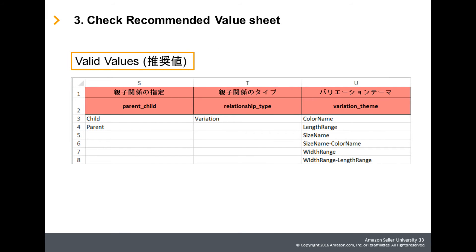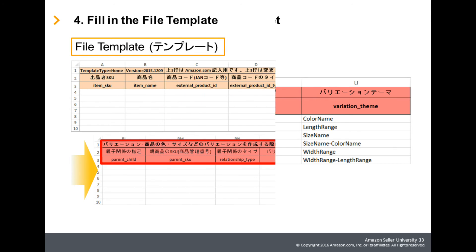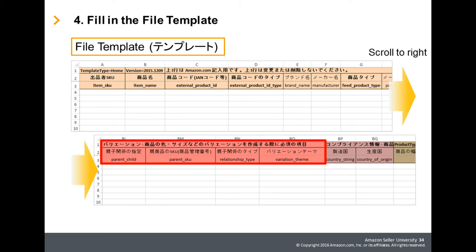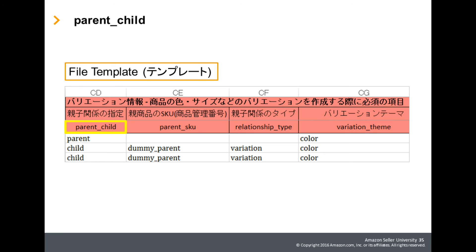Next, look at the Valid Values sheet where you will see the valid values you can input for each field. After referring to the data definition sheet and the valid values sheet, go to the file template and fill in the fields with details of your product. Now, let's go over how to fill in the fields related to creating a variation relationship.